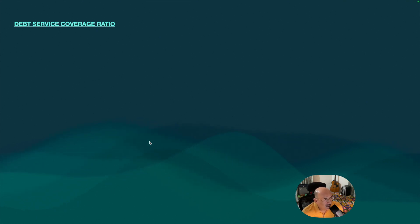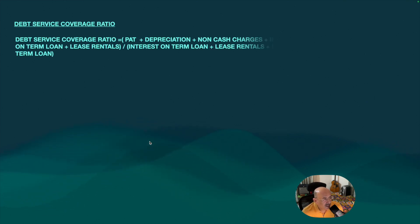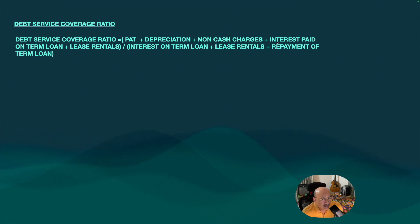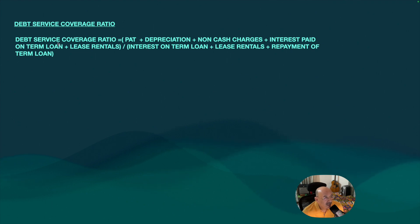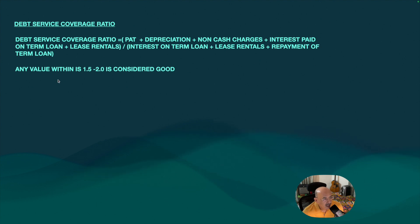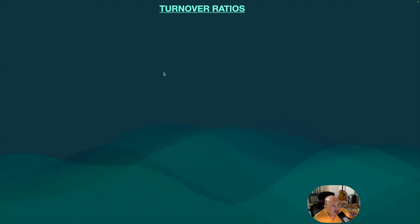Debt service coverage ratio is profit after tax plus depreciation plus non-cash charges plus interest paid on term loan plus lease rentals, divided by interest on term loan plus lease rental plus repayment of term loan. Higher the better. Any value within 1.5 to 2 is considered good.